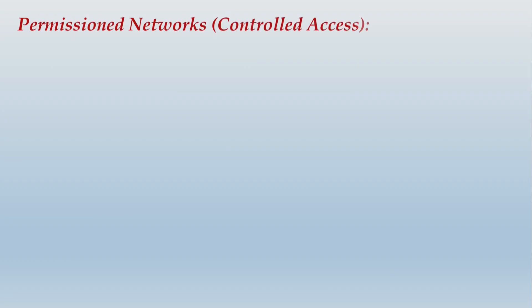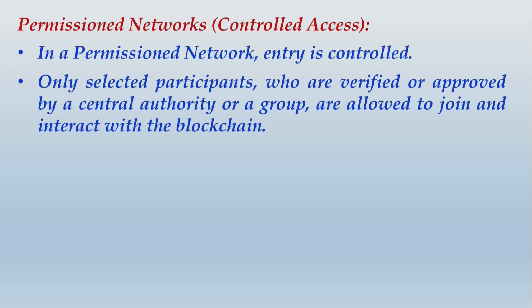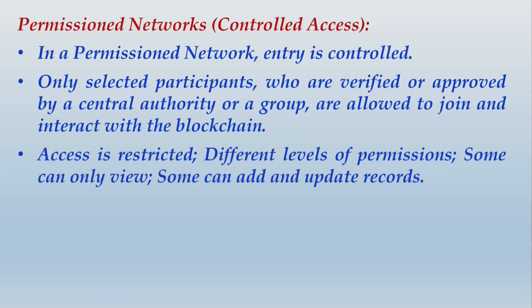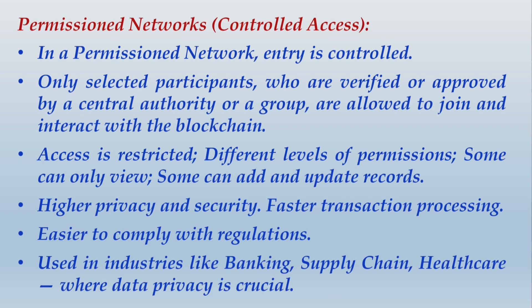In a permissioned network, entry is controlled — only selected participants who are verified or approved by a central authority or a group are allowed to join and interact with the blockchain. Access is restricted, and there are different levels of permission: some can only view, some can add and update records. Higher privacy and security result in faster transaction processing. It is easier to comply with regulations because it is controlled, and it is used in industries like banking, supply chain, and healthcare where data privacy is crucial.